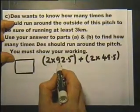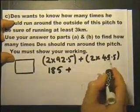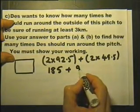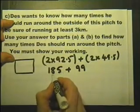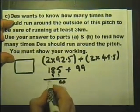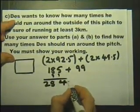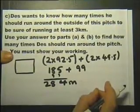That is the shortest distance it can possibly be around this pitch. So if we double this, what are we going to get? We're going to get 185. And if we double this, we're going to get 99. We add those two together, we're going to get 284.